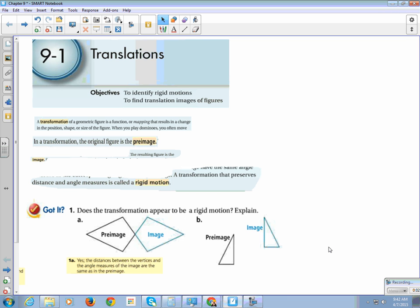The next one here, we have the image and the pre-image. They don't appear to change distances or angles, so we are going to say yes, the distance between the vertices and the angle measures of the image are the same as in the pre-image.